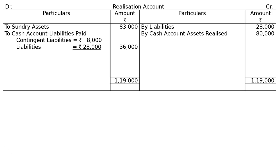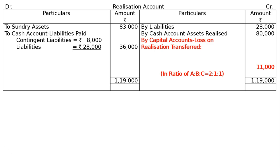The totaling on the debit side is rupees 1,19,000. We take it to the credit side and find the loss by capital accounts. Loss on realization is distributed in the ratio of A:B:C = 2:1:1. The gap is rupees 11,000. A will get rupees 11,000 multiplied by 2/4, that is rupees 5,500. B gets rupees 11,000 multiplied by 1/4, that is rupees 2,750.